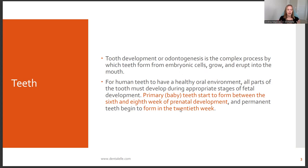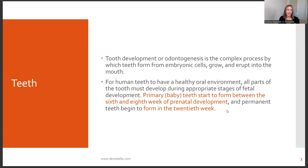Think about people where certain teeth haven't developed properly — they have a cleft palate, missing teeth, unhealthy teeth, thin enamel. They might not have developed in a healthy oral environment. The key points: primary teeth start to form between the sixth and eighth week of prenatal development, and permanent teeth begin to form in the twentieth week. If development happens too soon or too late, this is when problems occur.